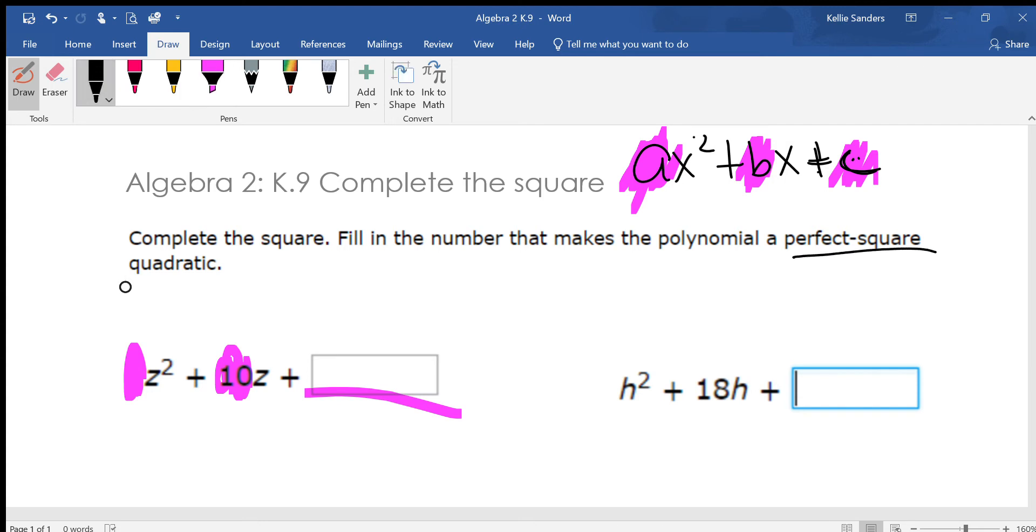Before that, though, let's talk about perfect squares. We did that for like K5, K6, something like that. And if we had X squared plus 14X plus 49.